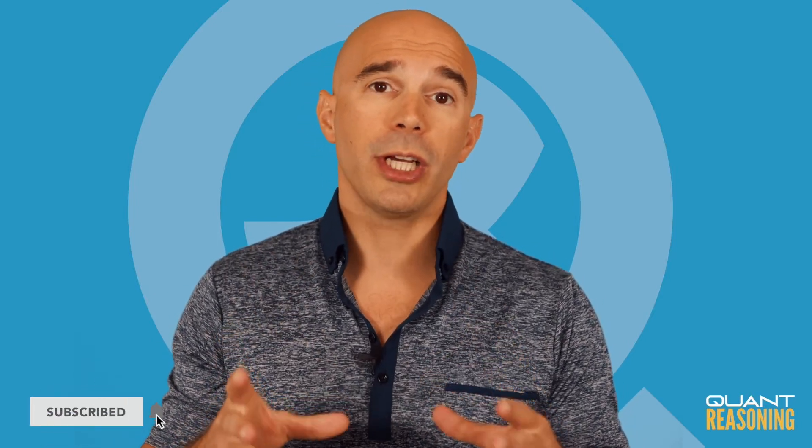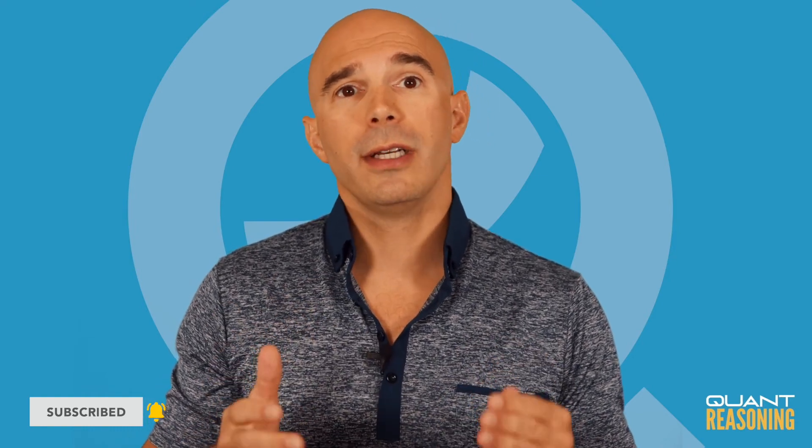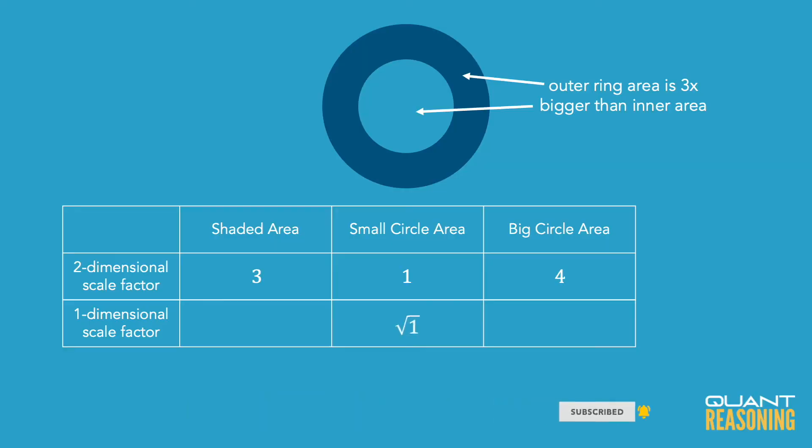When we're dealing with similar shapes, we just take the square root of that ratio. So the ratio of one to four turns into a ratio of one to two. And now we can finish this off and say that the circumference of the big circle is exactly two times as big as the circumference of the small circle.